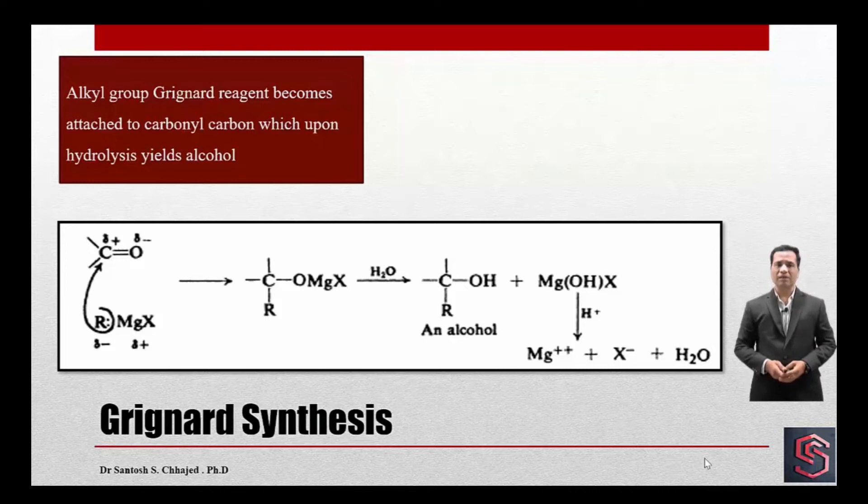So being electron rich, the alkyl group of Grignard reagent will coordinate its electron to the carbonyl carbon of an aldehyde or ketone which is electron deficient. As a consequence of that, a new bond will form between carbonyl carbon and alkyl group of Grignard reagent. It is shown in the generalized reaction.